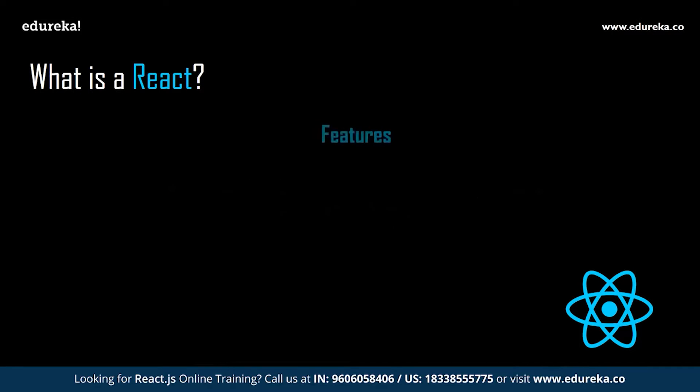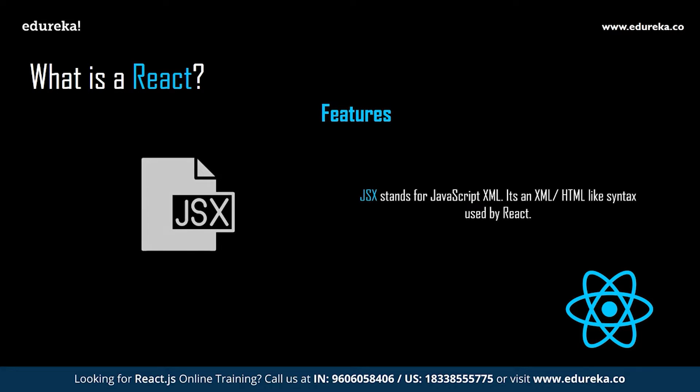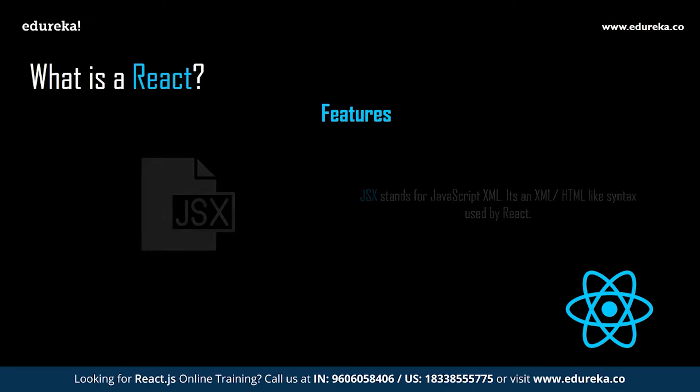Talking about the features of React — JSX. JSX stands for JavaScript XML. It is an XML/HTML-like syntax used by React. It extends the ECMAScript so that XML or HTML-like text can coexist along with the JavaScript React code. This syntax is used by preprocessors like Babel to transform HTML-like text found in JavaScript files into standard JavaScript objects. With JSX you can embed HTML code inside JavaScript, making HTML code easy to understand and boosting JavaScript performance while making our application robust.